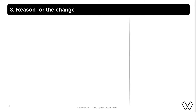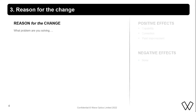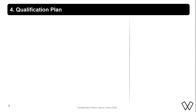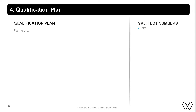Step 3: What is the reason for the change? Identify positive and negative effects due to the proposed change. Step 4: What is the qualification plan? Add split lot numbers if a split is required.